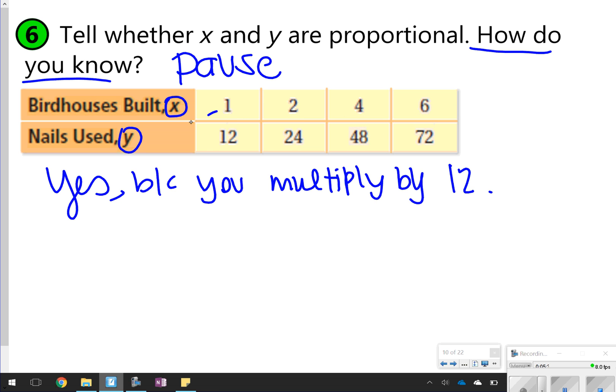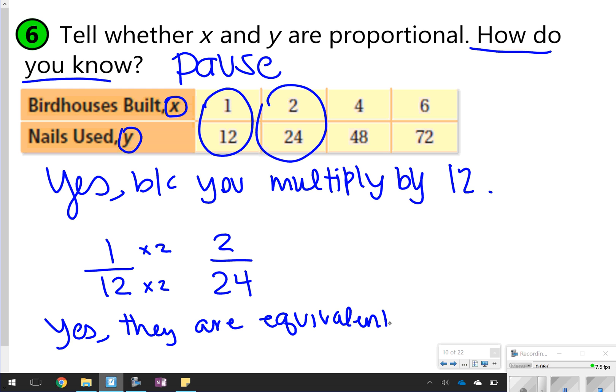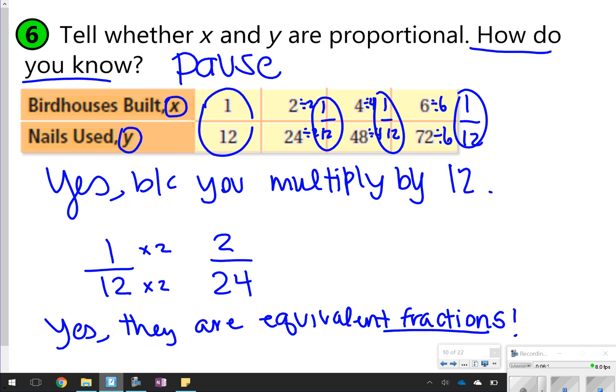Another way you could do it is you could write two of them as fractions. 1/12, and 2/24. These both can be reduced by the same number or multiplied by the same number. Notice how 1 times 2 gives you 2, and 12 times 2 gives you 24. So you can also say yes, they are equivalent fractions. If you go back and reduce everything, 2 divided by 2 is 1. 24 divided by 2 is 12. That's also 1/12. 4 divided by 4 is 1. 48 divided by 4 is 12. That's 1/12. 6 divided by 6 and 72 divided by 6. 1/12. All those reduce to 1/12. So they're all equivalent fractions. In order for it to work, it has to be all of them. So just keep that in mind.